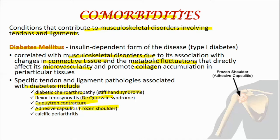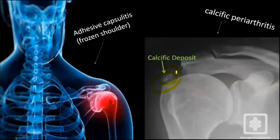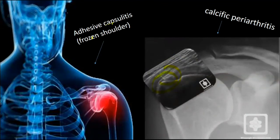Also associated with diabetes is adhesive capsulitis, or frozen shoulder — a painful condition in which shoulder movement becomes limited. It happens when the strong connective tissue surrounding the shoulder becomes stiff or thick, causing immobilization of the shoulder. Additionally, calcified periarthritis involves painful swelling around the joints, also known as calcium crystal disease, where pain is caused by crystal deposits of the mineral calcium rubbing against soft tissues inside the body.